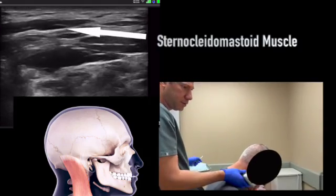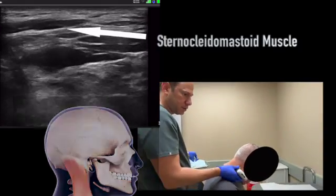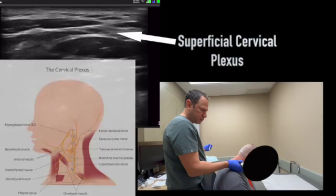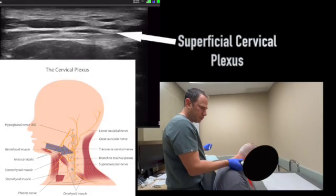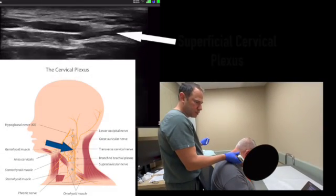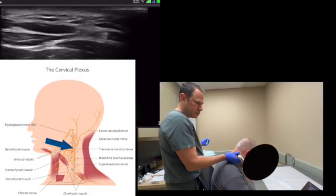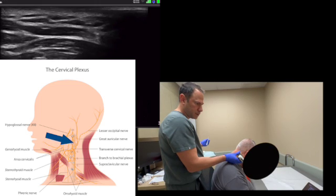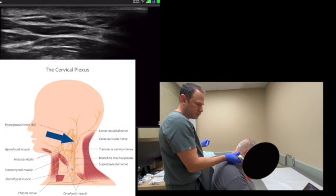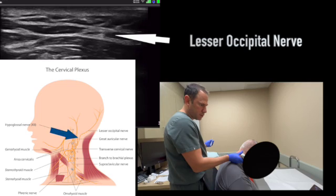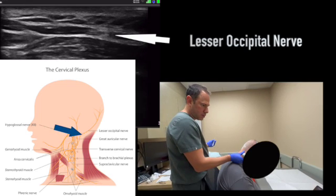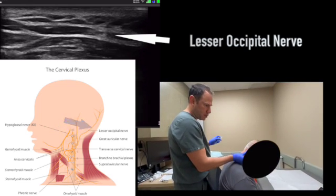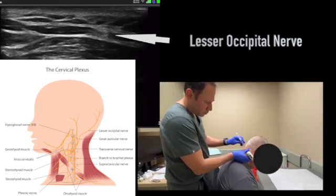Near the cranium, it perforates through the deep fascia and passes onto the scalp around the auricle to supply sensory innervation for the skin and connect with the great auricular and great occipital nerves and the auricular branch of the facial nerves. The nerve also supplies an auricular branch which provides sensory innervation to the upper and medial third of the auricle.